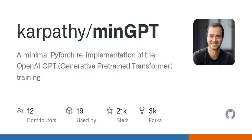Have you ever encountered the terms byte-pair encoding or transformer? They sound technical, right? Here's a relatable analogy: imagine trying to efficiently pack a suitcase. Byte-pair encoding is like folding clothes in a way that maximizes space, while the transformer model is like organizing your suitcase so you can quickly access all your items without digging through layers.